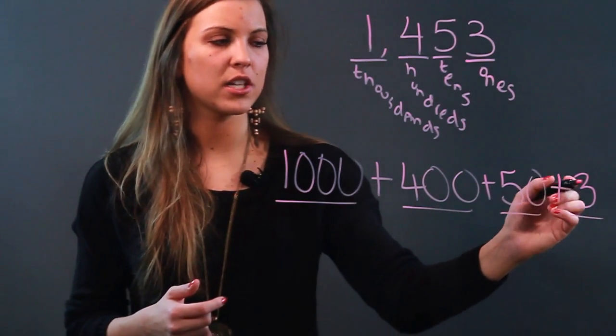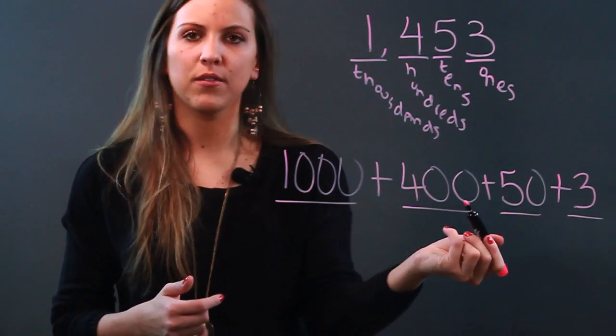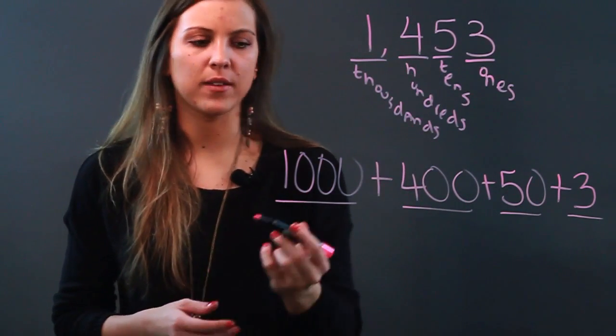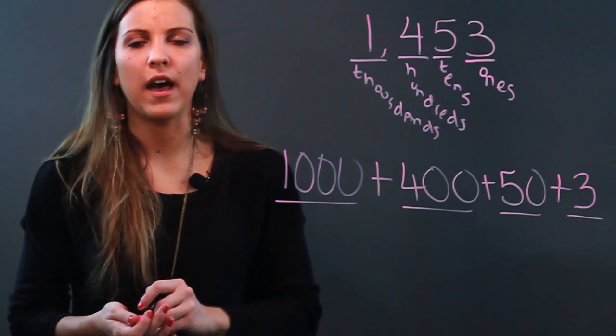So 3 is in the ones digit, that's just 3. 5 was in the tens digit, I made it times 10. 4 is in the hundreds, so I wrote it as 400. And 1 is in the thousands, so I wrote it as 1,000. So that's how you expand the number and write it to show the value of each digit.